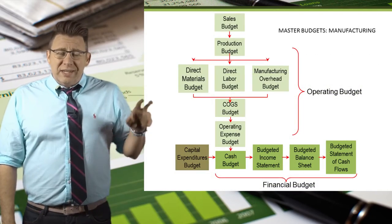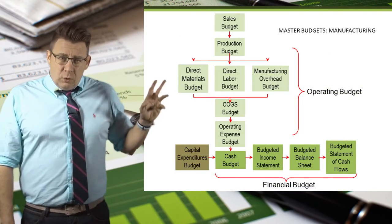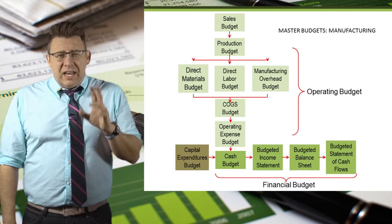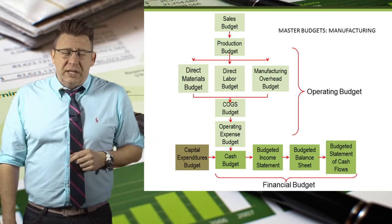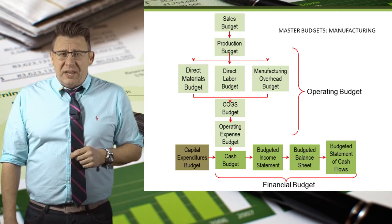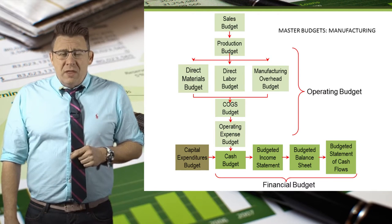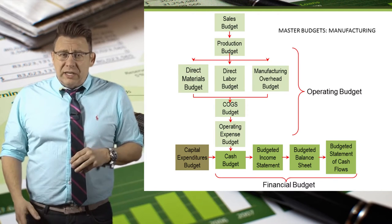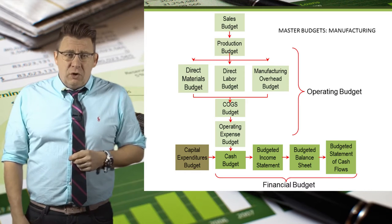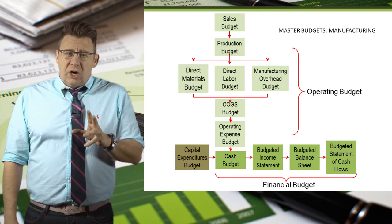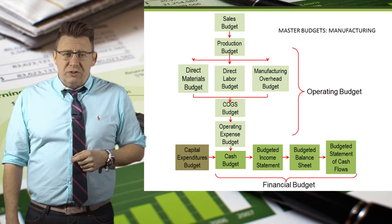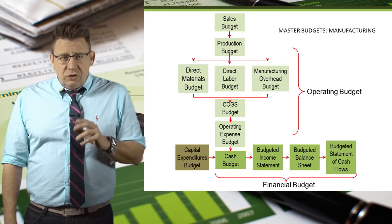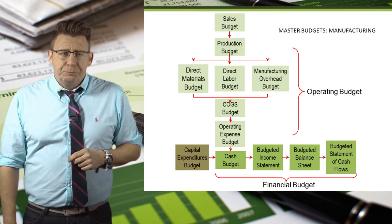The cash payment budget, which is part of the cash budget, is the ninth budget completed in the master budget process. This budget can be done either separately or as part of the larger cash budget. Either way, we are going to use the results in the cash budget.